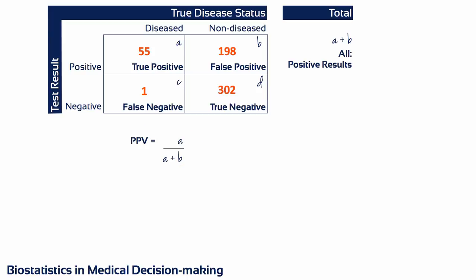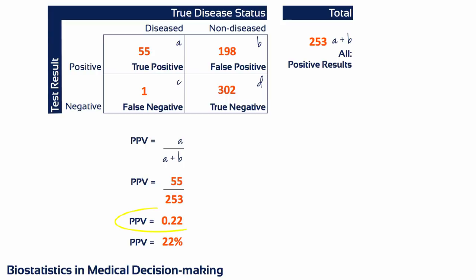For example, if we had these data, then the positive predictive value would be 55 divided by 253, which is 0.22 to two decimal places, or 22%.